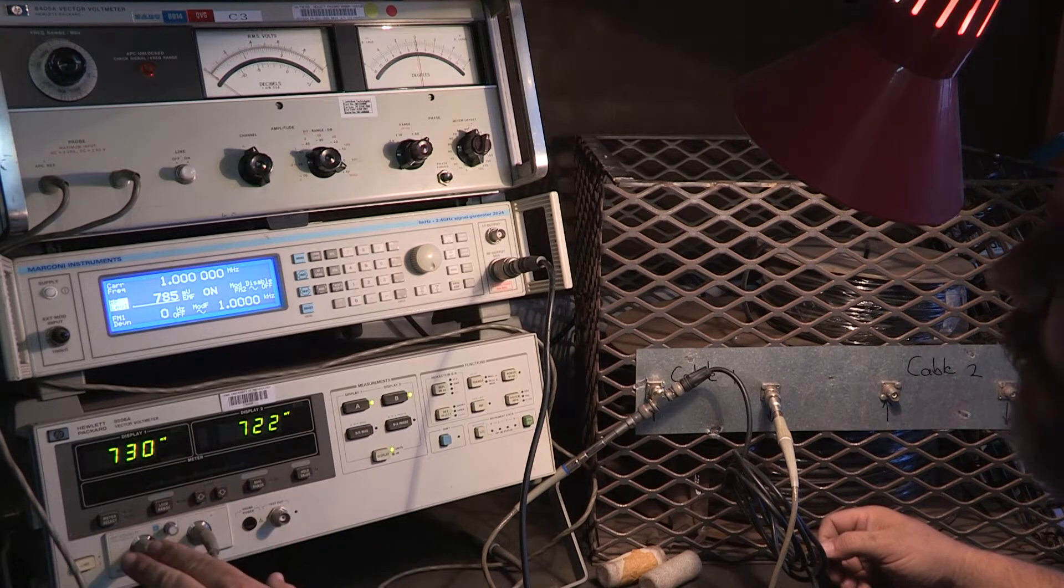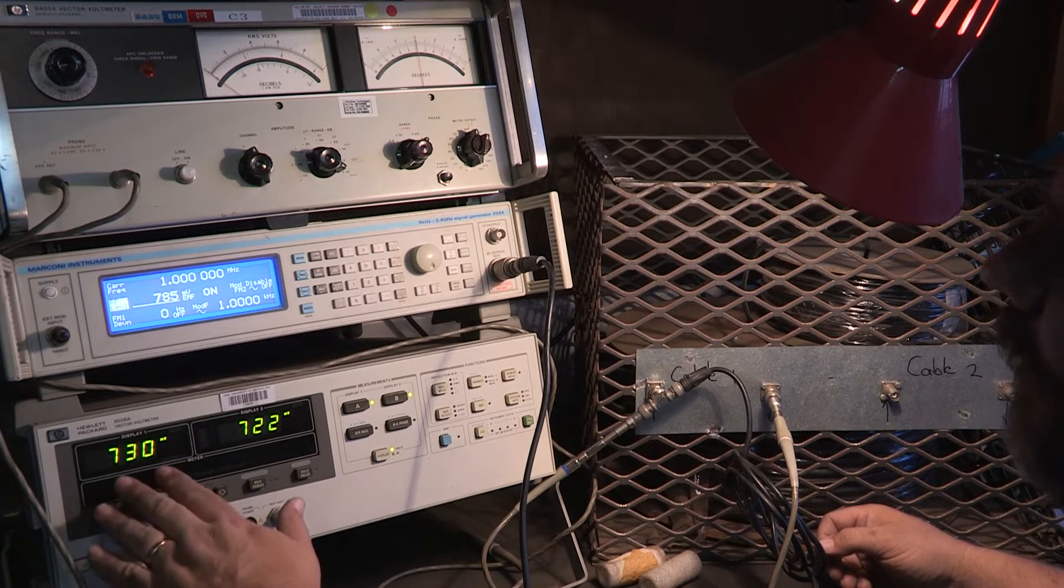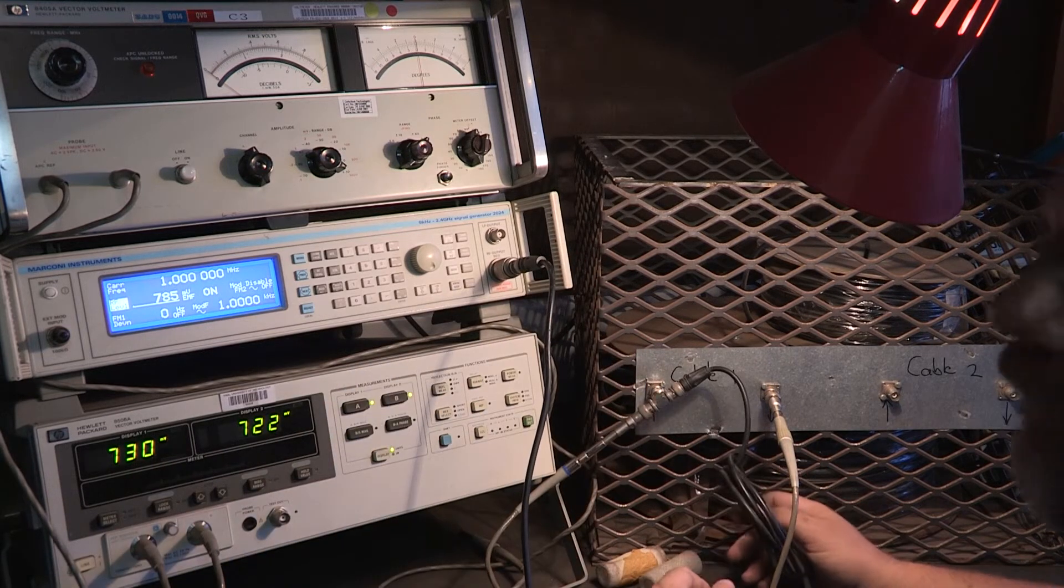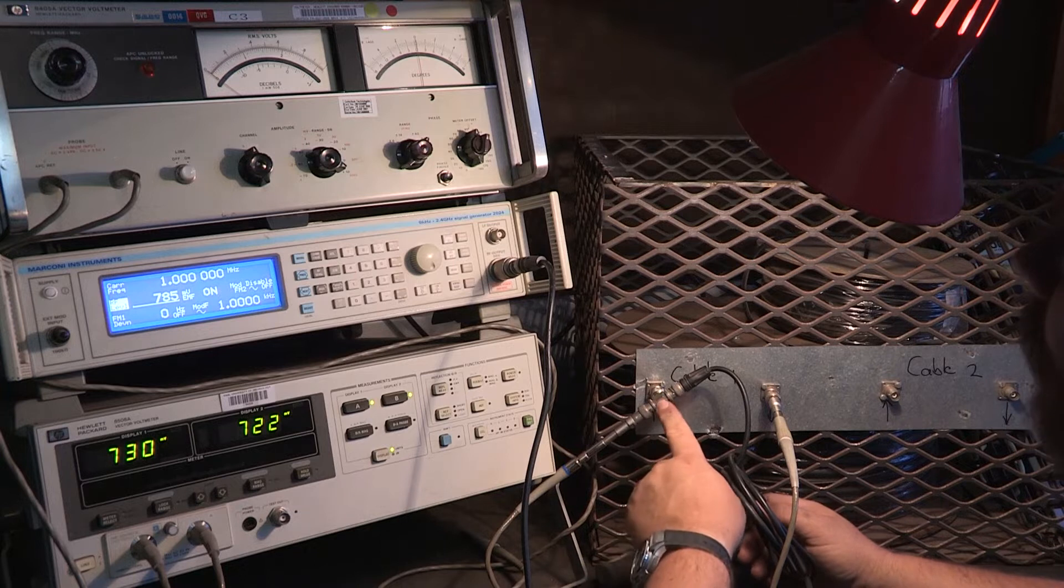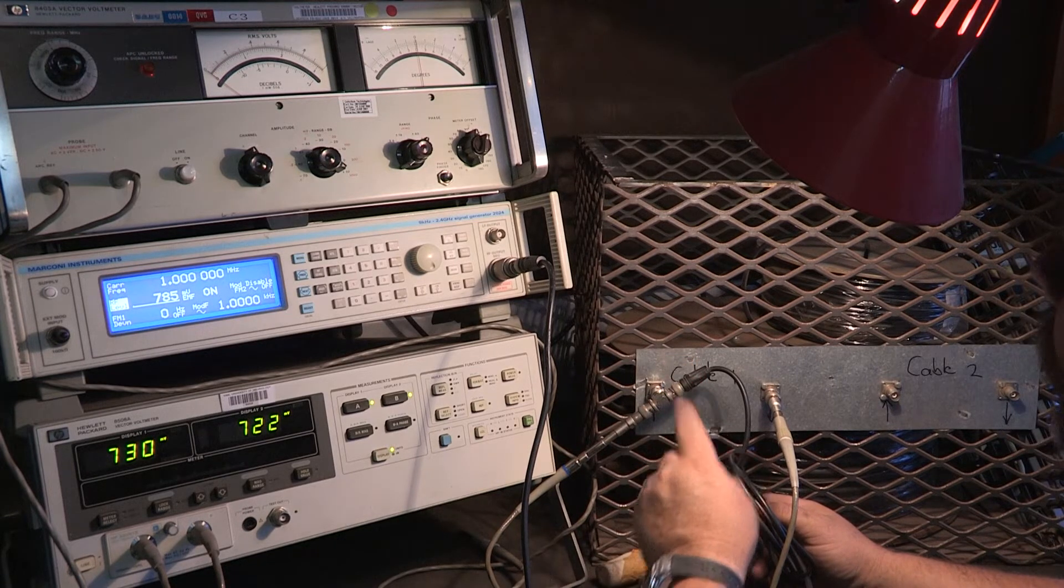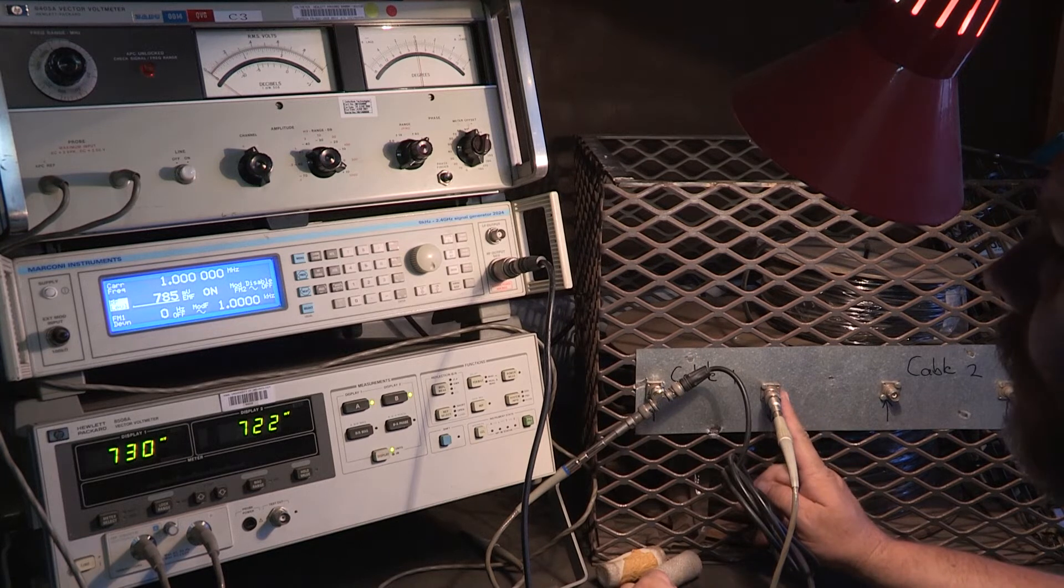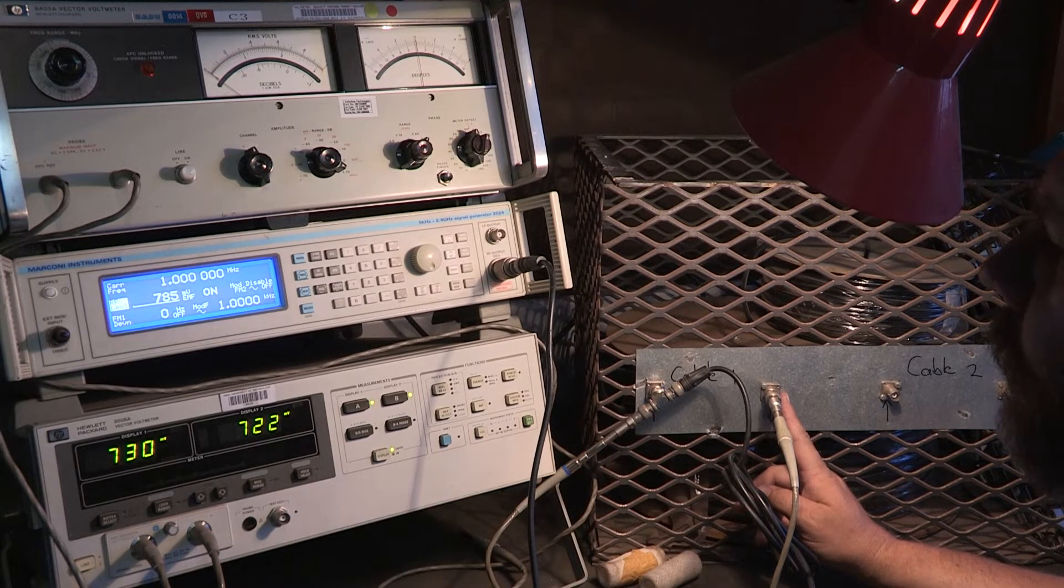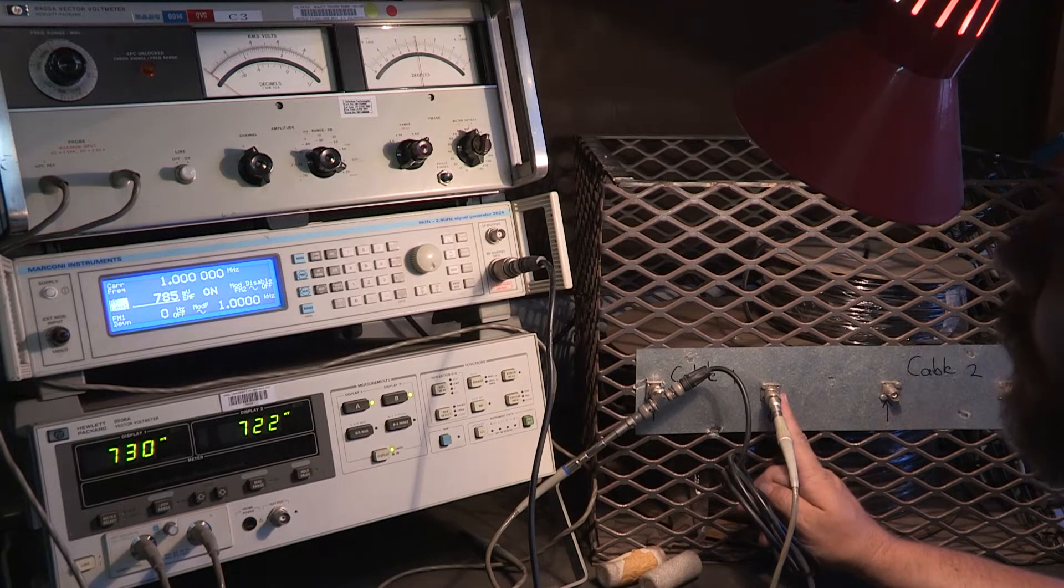On the display of the vector voltmeter, we have channel A and channel B. Channel A gives me, after my feed line and everything else, the voltage going into the cable. And as a result, going out of the cable on channel B, I can simultaneously see the output cable voltage.